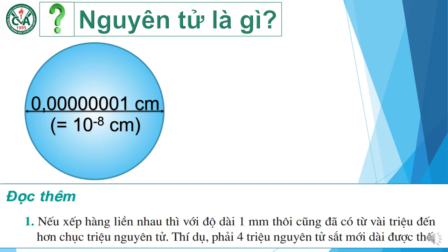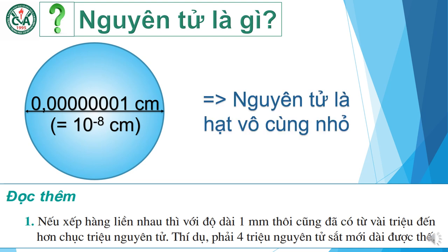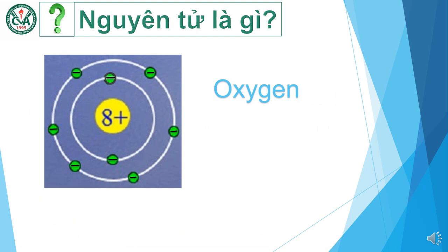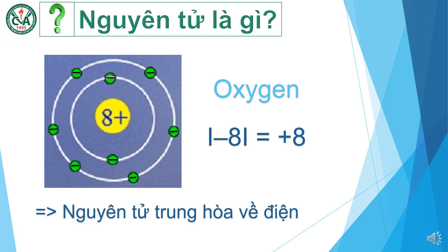Thêm nữa, ở phần đọc thêm, nếu xếp hàng liền nhau thì với độ dài 1 mm thôi cũng đã có từ vài triệu đến hơn chục triệu nguyên tử. Thí dụ, phải 4 triệu nguyên tử sắt mới dài được thế. Từ những thông tin này, chúng ta thấy nguyên tử là hạt vô cùng nhỏ. Xét về điện tích đối với nguyên tử oxygen: nguyên tử oxygen có điện tích hạt nhân là 8+ và có 8 electron. Do đó, tổng điện tích âm của các electron có trị số tuyệt đối bằng tổng điện tích dương của hạt nhân là 8. Điều này cho thấy bình thường nguyên tử trung hòa về điện.